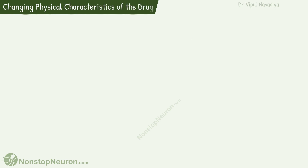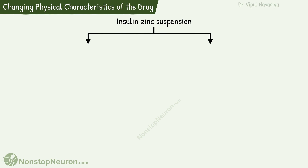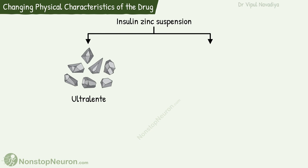The next method is changing the physical characteristics of the drug. For example, insulin-zinc suspension. There are two such suspensions. One is ultralente. In this, large crystalline particles are formed, which are insoluble in water. It releases insulin slowly, so absorption and therefore action is prolonged.